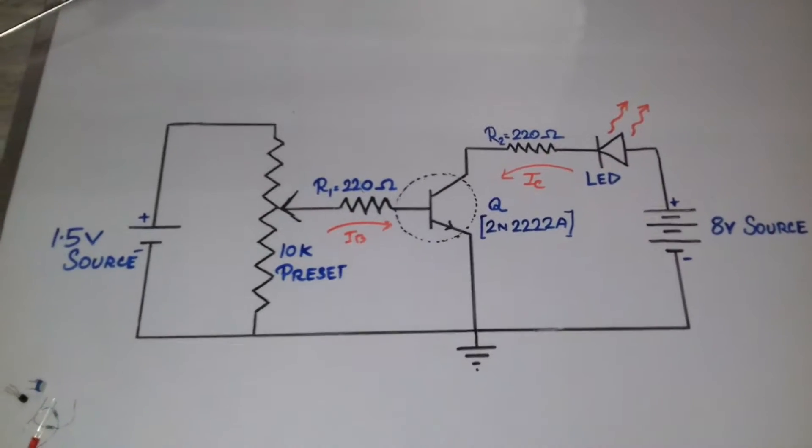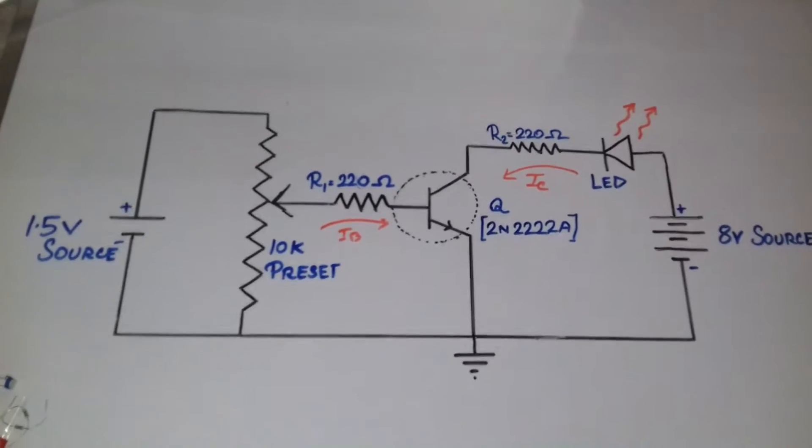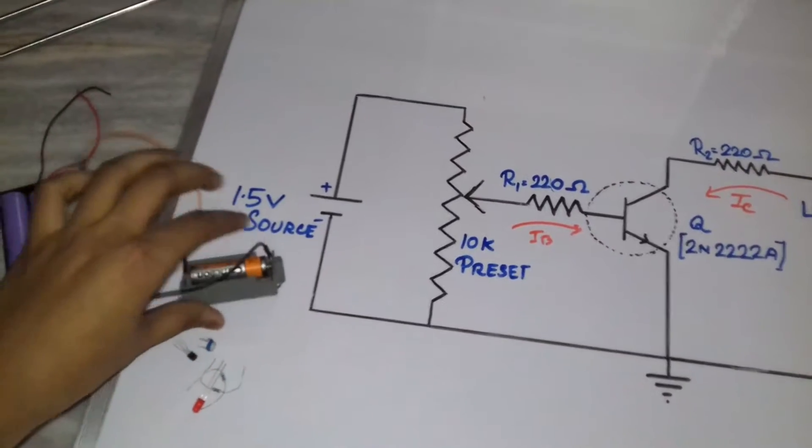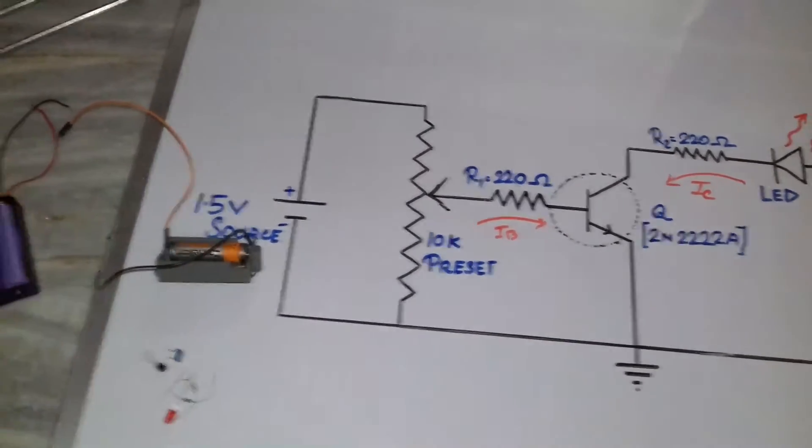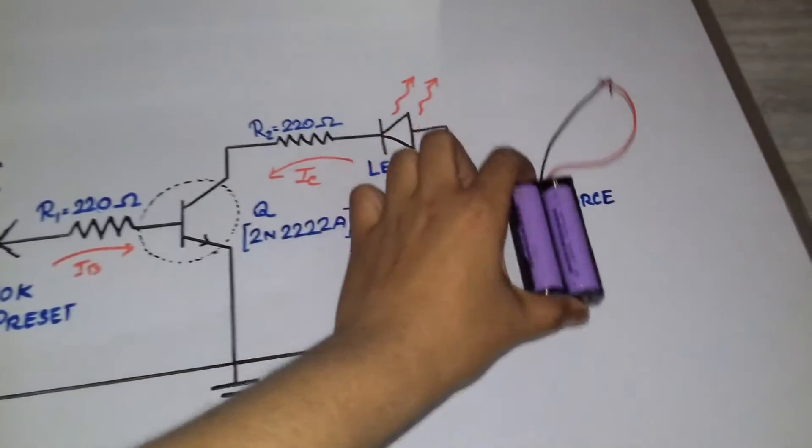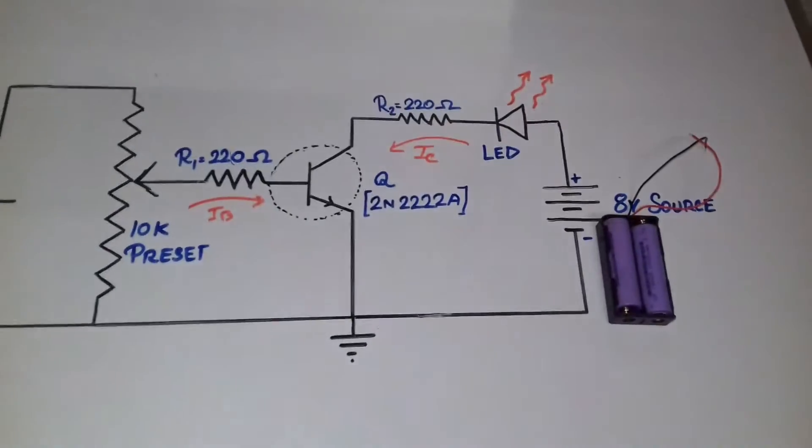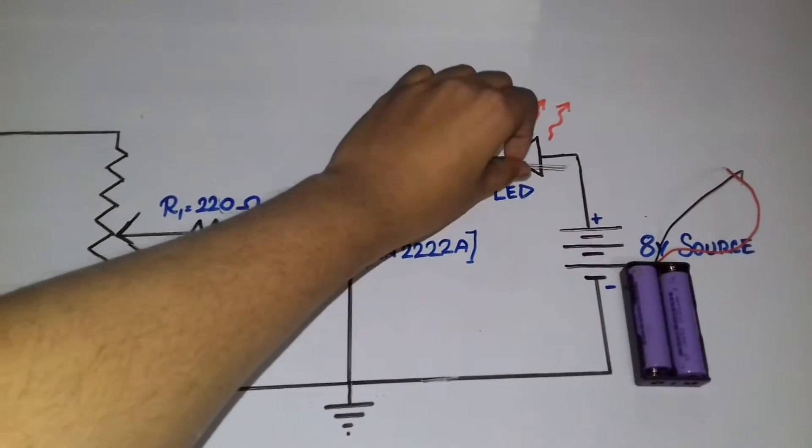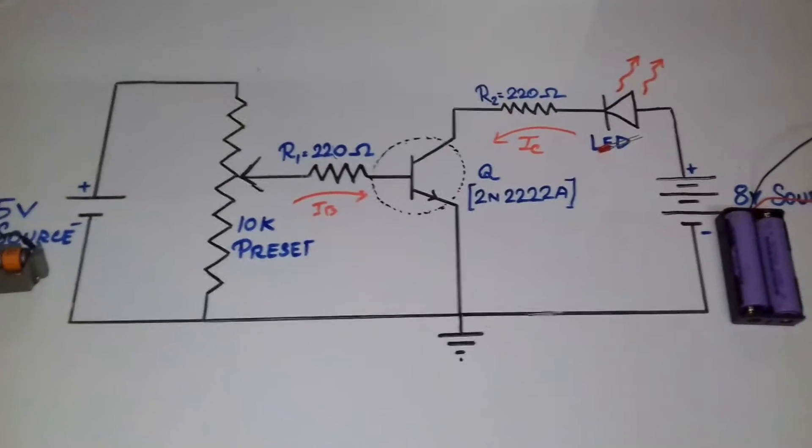Let's get accustomed with the practical circuit elements. This is our 1.5 volt source. This is my 8 volt source. An LED. The transistor.